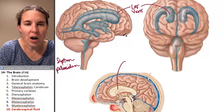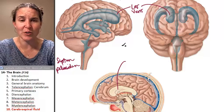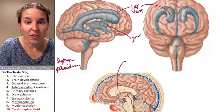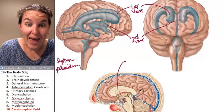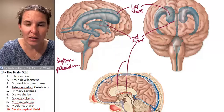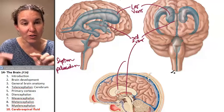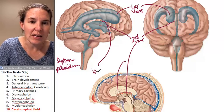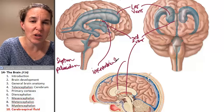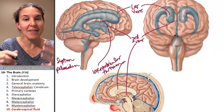The lateral ventricles are connected to the third ventricle — you have one lateral ventricle and another lateral ventricle, and then you've got the third ventricle. Connecting the lateral ventricle and the third ventricle is the interventricular foramen. So connecting them, we've got the interventricular foramen, and then we're in the third ventricle.